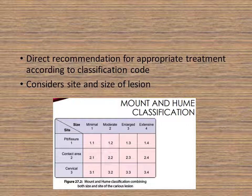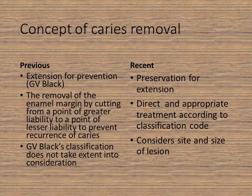Although we follow the ICDAS classification, it is always good to know that Mount and Hume's classification is also there. Depending on the site — whether pit or fissure locations, contact areas, or the cervical third of the teeth — and depending on the size — whether minimal, moderate, enlarged, or extensive — you can always classify your lesion.